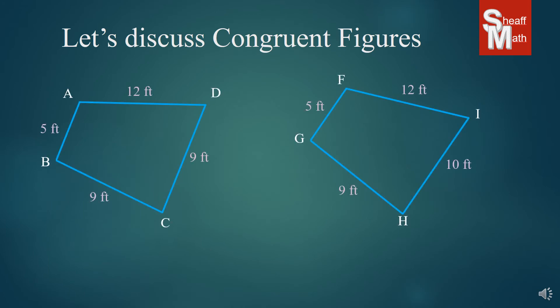Now let's take a look at these two figures right here. We only have the sides, but just looking at the sides, are they pretty much the same? Are they identical? Do they have congruent corresponding sides? Well, at first glance they appear to be — they look the same as far as these shapes are concerned. But if you notice this side and this side, these are different. And any time you find a difference in a corresponding side, if they're different numbers, it's absolutely a no.